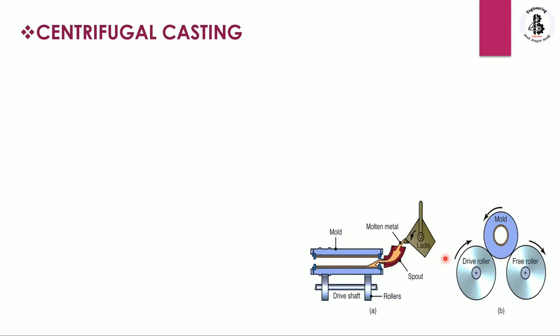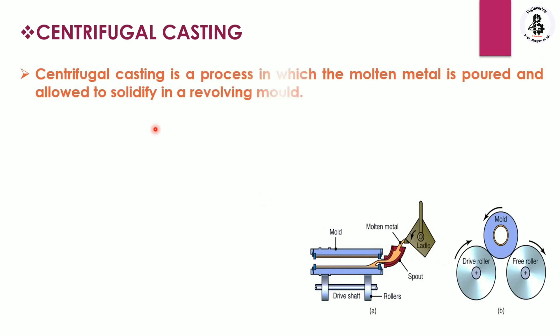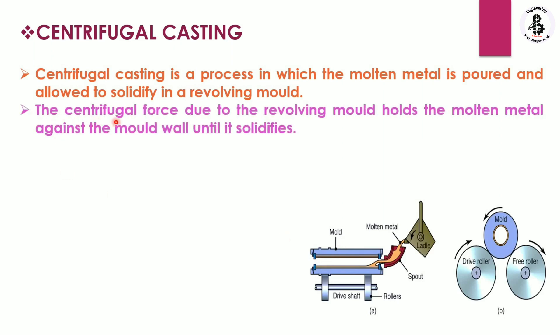Centrifugal casting is a process in which molten metal is poured and allowed to solidify in a revolving mold. By the application of the ladle, molten metal is poured in. By the rotation, a centrifugal force is generated, and due to that centrifugal force the molten metal is distributed around the periphery of the hollow mold and allowed to solidify, producing a hollow cast product. The centrifugal force due to the revolving mold holds the molten metal against the mold wall until it solidifies.